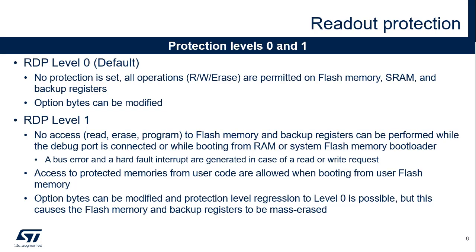The read protection is activated by setting the RDP option byte and then by applying a system reset to reload the new RDP option byte. There are three levels of read protection, from no protection at level 0 to maximum protection or no debug at level 2. When the lowest RDP level, level 0, is set, the device has no protection. All read and write operations on the flash memory and the backup registers are possible in all boot configurations: flash user boot, debug, or boot from RAM. Option bytes are also changeable in this level. Level 0 is the factory default level.